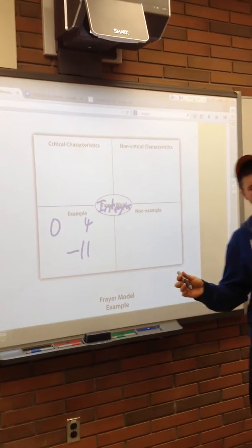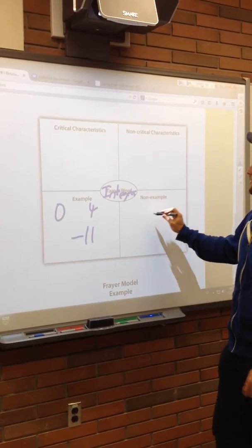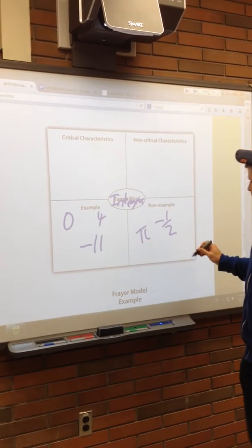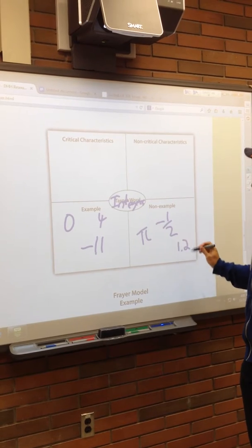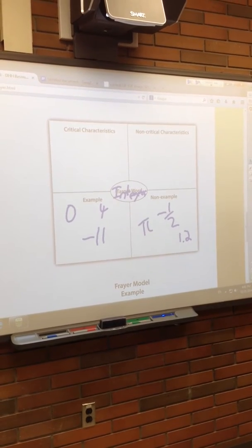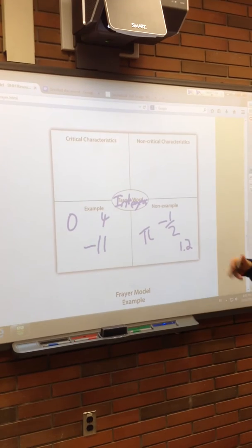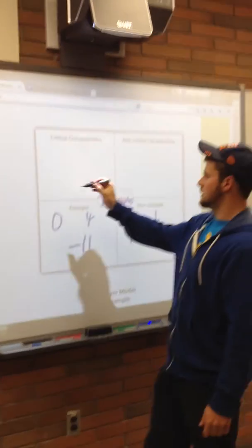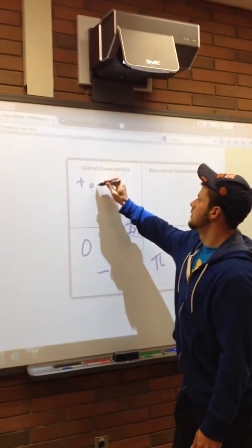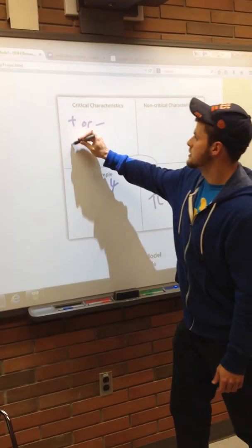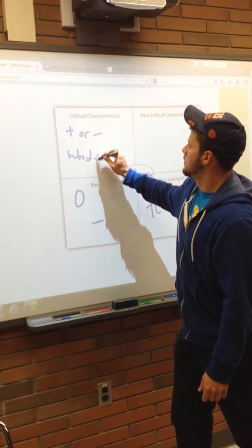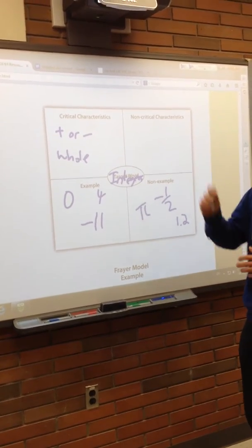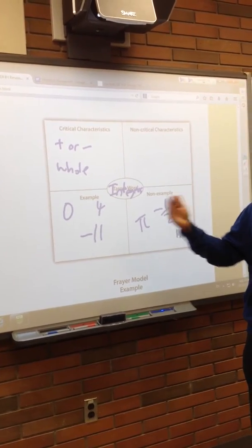And then we'll say, well, what are not examples? Students will think about what doesn't fit within that, and they'll say negative one-half is not an example, maybe pi, and 1.2 — all these things that aren't whole numbers. So then we're able to go a little bit more abstract and say, well, what defines an integer? Why are these not examples and these are examples? And they can say it's positive or negative numbers — they're whole numbers — and they go all the way from negative infinity to infinity, and all these different characteristics.